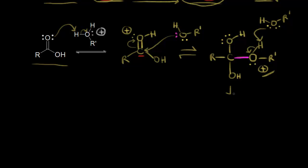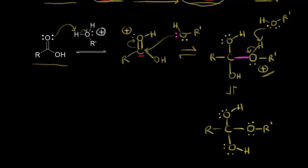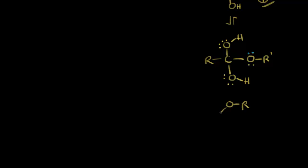We're going to deprotonate. We have our carbon bonded to the top oxygen with two lone pairs and a hydrogen, and an R group off to the left. The oxygen down here now has two lone pairs of electrons, still bonded to our R prime group. The electrons in blue move off onto the oxygen — that's the deprotonation step. The next step is to protonate the OH at the bottom. We draw in a source of protons; a lone pair of electrons on this oxygen can pick up a proton, leaving these electrons behind.